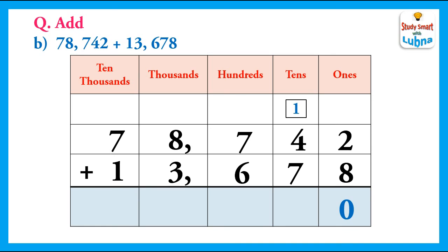After this, we will add the tens: one plus four plus seven equals twelve. So we regroup the tens — we write two in the tens column and put one carry on the hundreds column. After this, we will add the hundreds. In the hundreds column we have one, seven, and six, so we add them: one plus seven plus eight plus six equals fourteen. We regroup the hundreds, write four in the hundreds column, and put one carry on the thousands column.